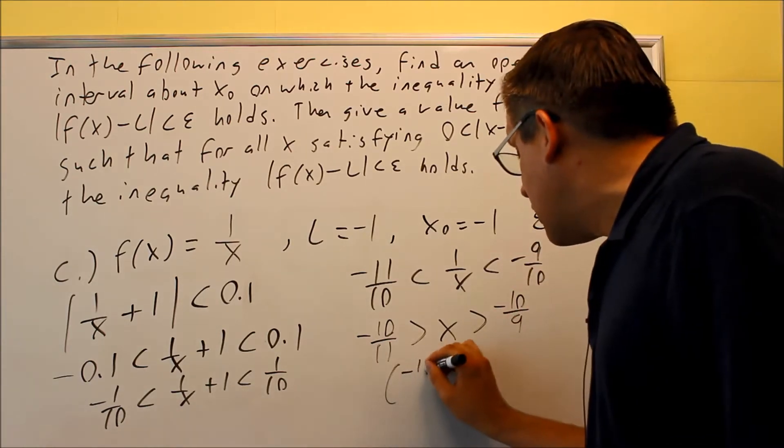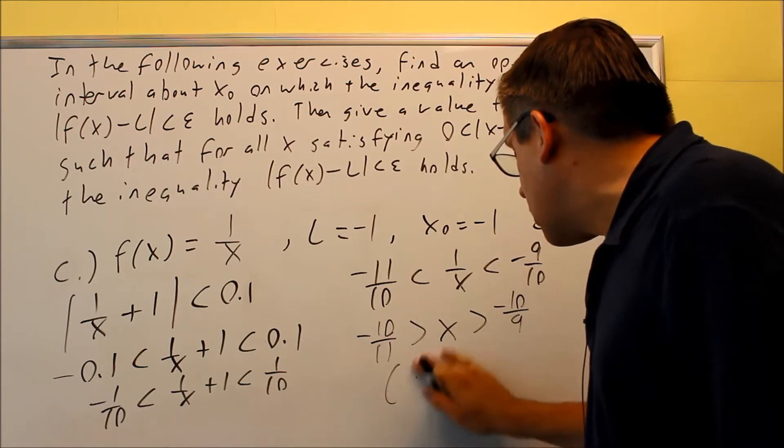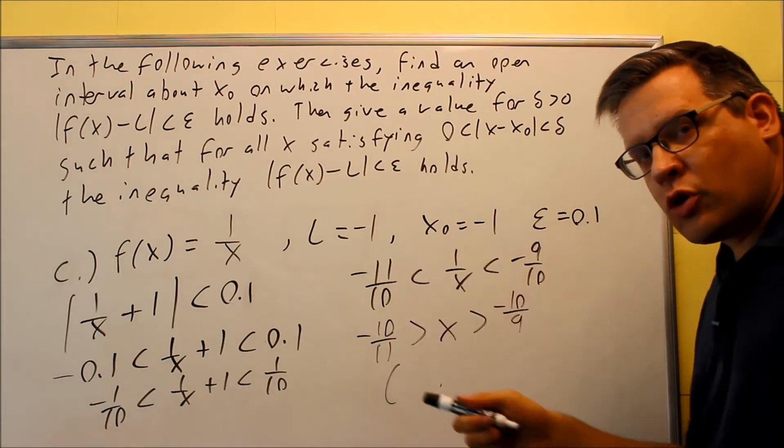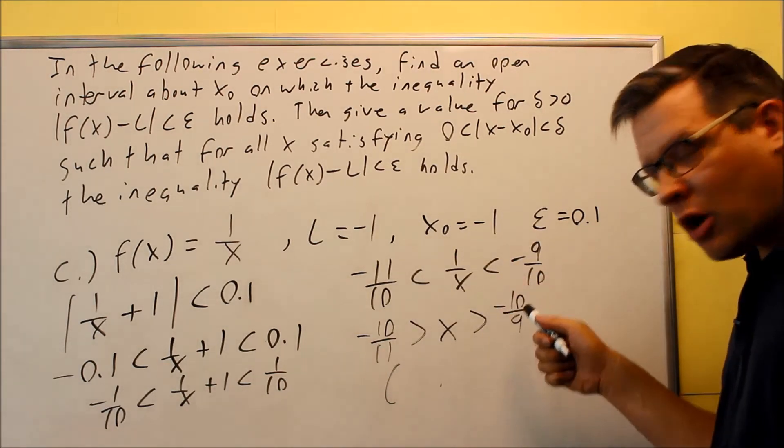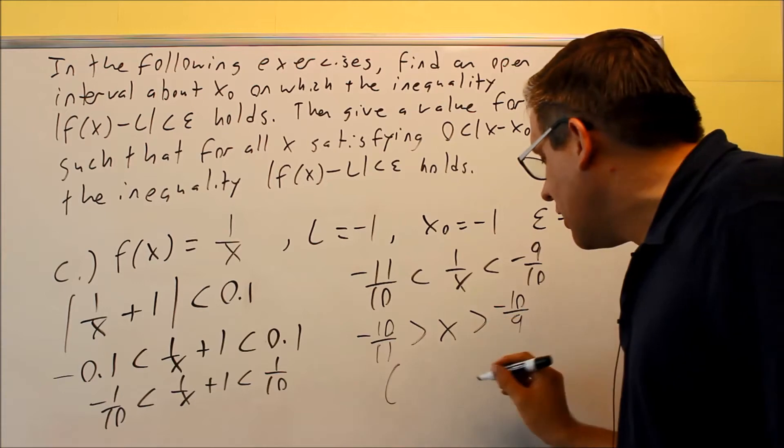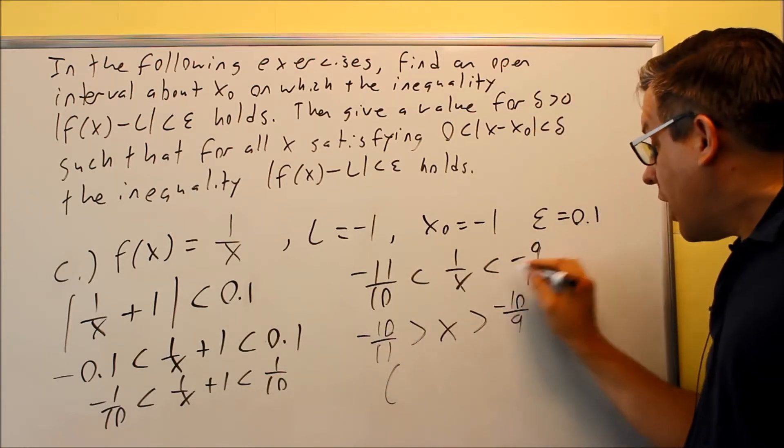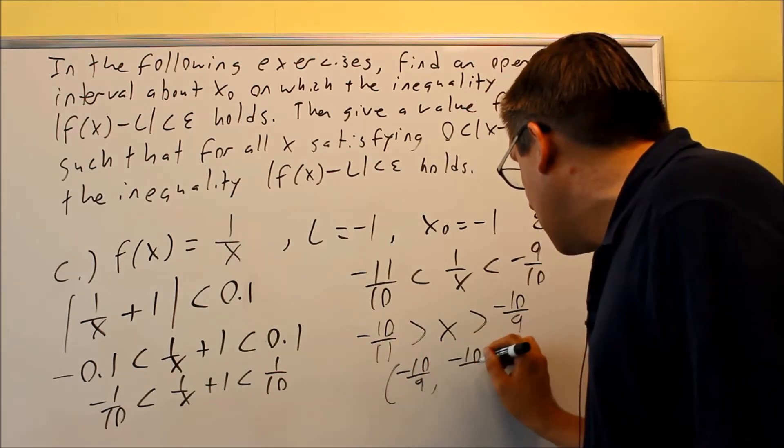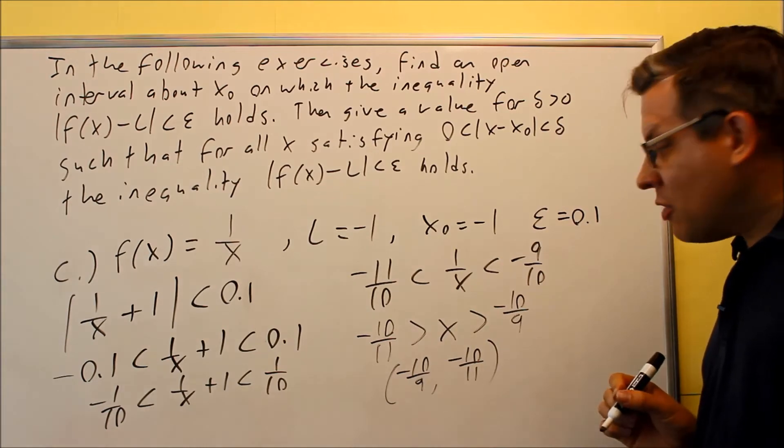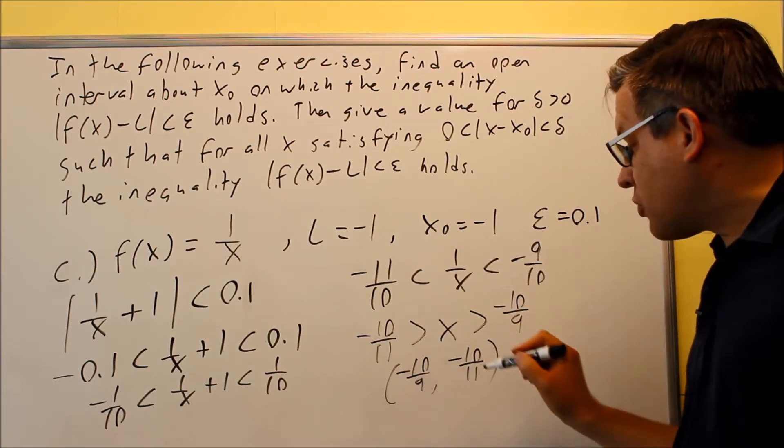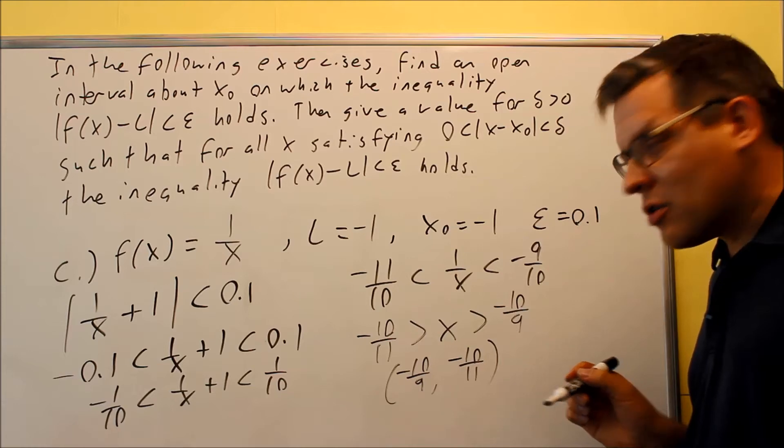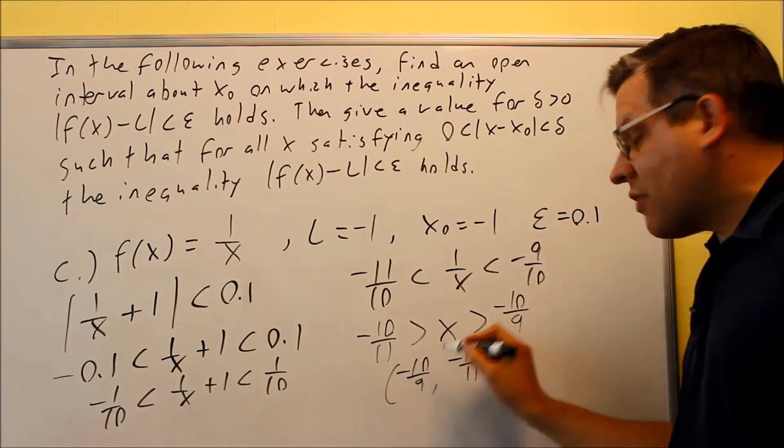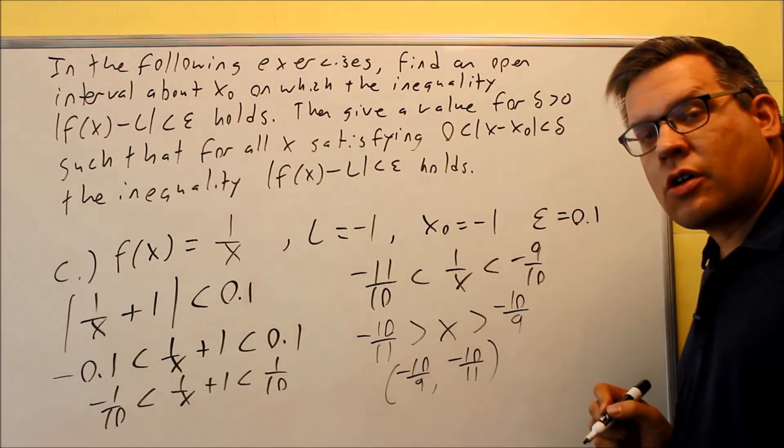So now we have our open interval. Actually, we have to make sure we write this correctly. Since we reversed the order of our inequalities, this is the one that's actually smaller. So be careful when you rewrite that. You don't want to simply write it in the same order. You want to use this one because that's the smaller one. Negative 10 ninths and negative 10 elevenths. That right there is going to be our open interval. We have to always put the smaller number first. In this case, negative 10 ninths is actually the smaller number. Negative 10 elevenths is the larger number.